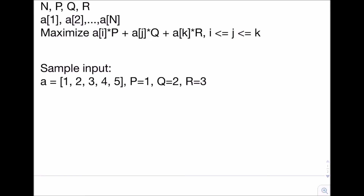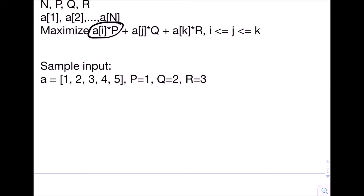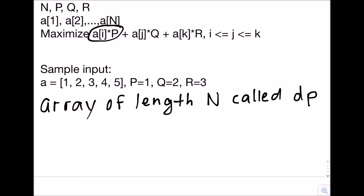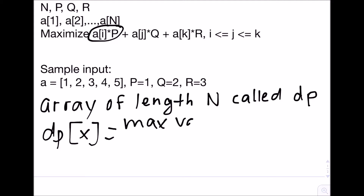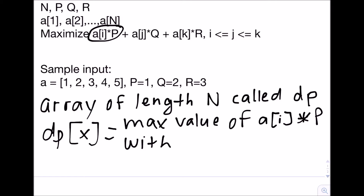The sample input is as shown. Let's first consider how we can maximize a[i] times p. If we just wanted to maximize a[i] times p, we could look through every single value in the array a, multiply it by p, and take the maximum of all of those. However, that's not applicable to the bigger problem. So what we're going to do is use dynamic programming to maximize a[i] times p. We're going to create an array of length n called dp, and define every element x in this array to be the maximum value of a[i] times p with i less than or equal to x.